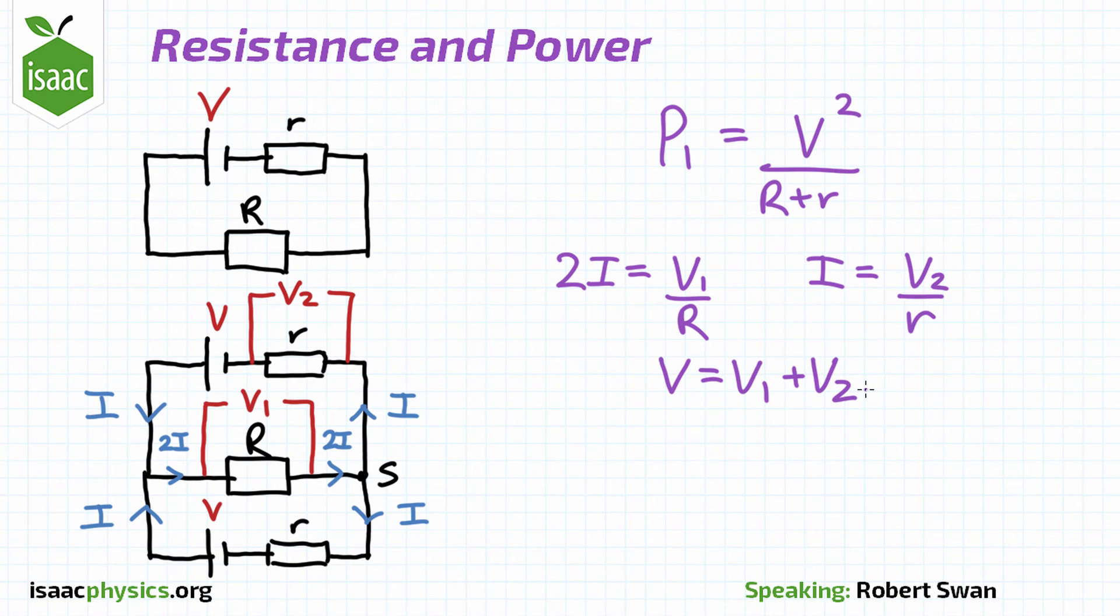We can use these three equations to eliminate V1 and V2 to find I in terms of V, uppercase R, and lowercase r. P2 is then the sum of I squared R for each component in the circuit. Since we have expressions for P1 and P2, and we know their ratio, we can find the ratio of uppercase R over lowercase r.